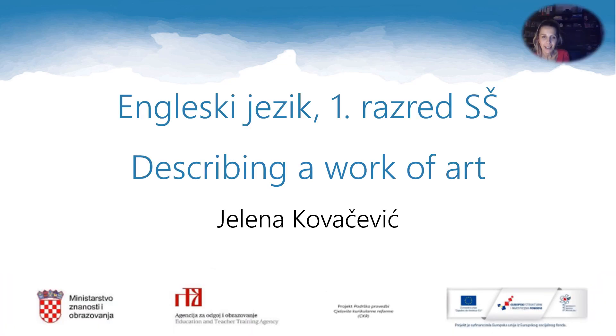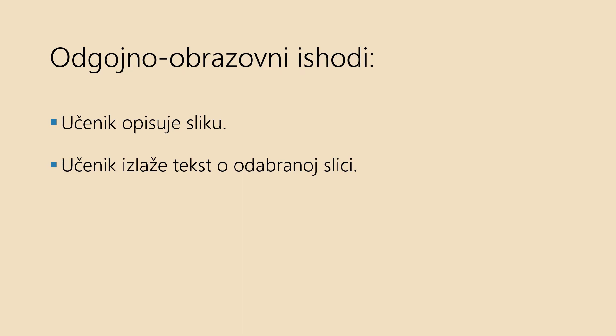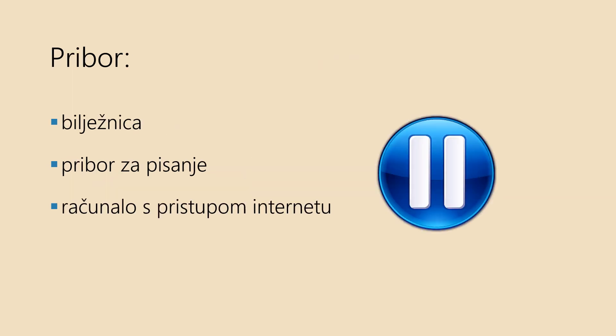Hello and welcome to E-Nastava. This is an English lesson for the first grade of secondary school. Today's topic is describing a work of art. My name is Jelena and I'll be your teacher for the day. Today you will describe and present a painting of your choice. For today's lesson you need your notebook, a writing utensil, and a computer or smartphone with internet connection. Bear in mind that you can pause this video lesson at any time to do the tasks required.